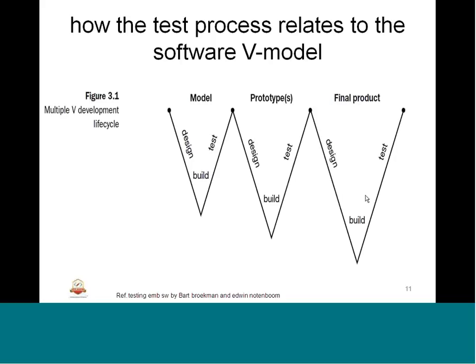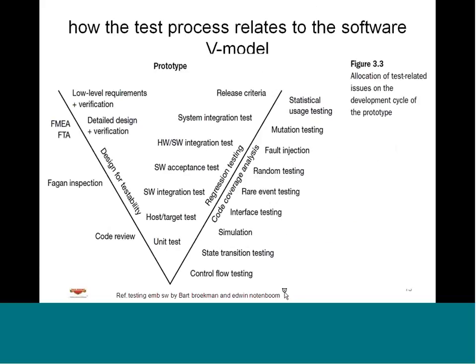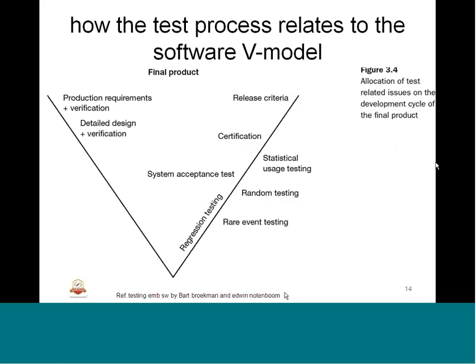The test activities are aligned on par with the left-hand edge of the particular model, prototype, or final product development. This is explained in detail in the book 'Testing Embedded Software' by Bart Broekman and Edwin Notenboom, which we covered in Unit 3. The various V models show how testing is aligned in terms of regression, smoking, random testing, statistical testing, and certification — all aiming to reach the release criteria at the top-right edge of the V model.